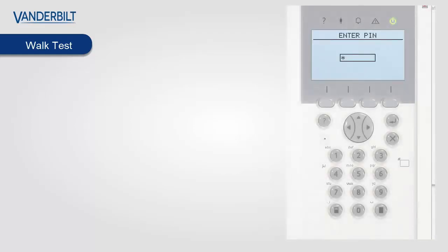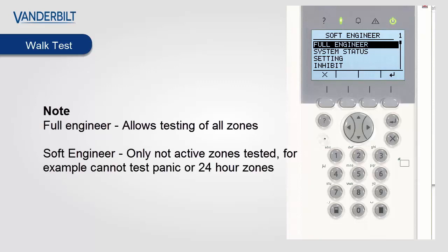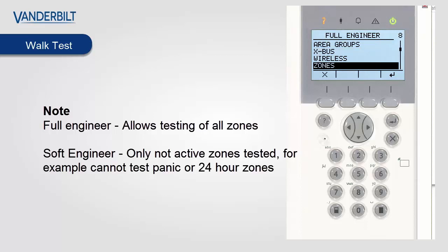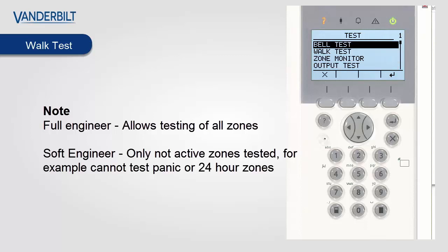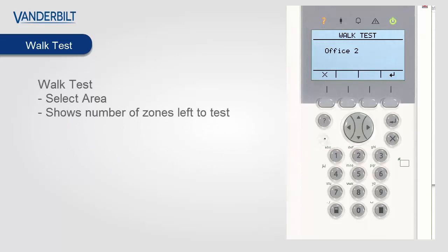You may observe that the number of zones available to test may vary by these menus. This is because alarm zones will not be tested when they are meant to trigger an alarm, so 24-hour alarm zones will not activate in walk test mode. To access this we enter full engineer mode, scroll down to the menu test, select the menu and select walk test. On multi-area systems you must now select the area you wish to test. We select area one where we have two zones to test.